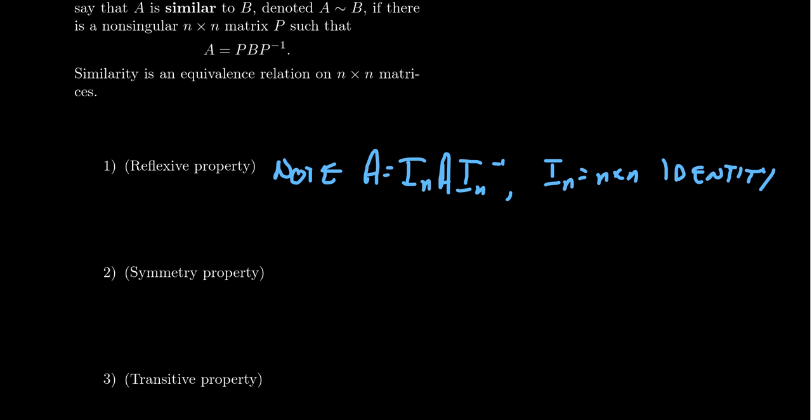Note that we have this factorization. The identity matrix is non-singular because the identity matrix's inverse is itself. This is a non-singular matrix. So this tells us that A is similar to A — every matrix is similar to itself. The reflexive property typically falls out pretty quickly, and we showed it here because we had an identity matrix.